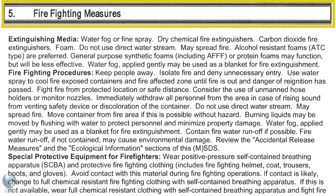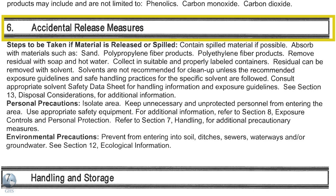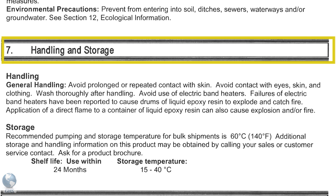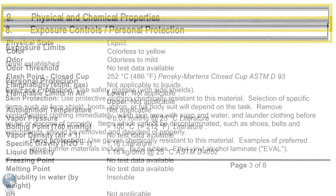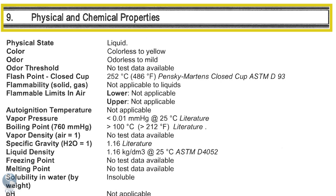Section 5 - Firefighting Measures lists suitable extinguishing techniques and equipment, and chemical reactions as a result of fire. Section 6 - Accidental Release Measures lists emergency procedures, protective equipment, and proper methods of containment and cleanup. Section 7 - Handling and Storage lists precautions for safe handling and storage including incompatibilities. Section 8 - Exposure Controls and Personal Protection lists OSHA's permissible exposure limits or PELs, threshold limit values or TLVs, appropriate engineering controls and proper personal protective equipment. Section 9 - Physical and Chemical Properties lists the chemical's characteristics.